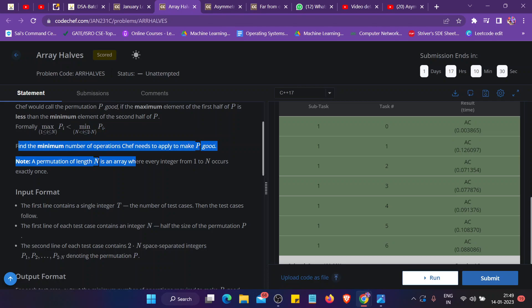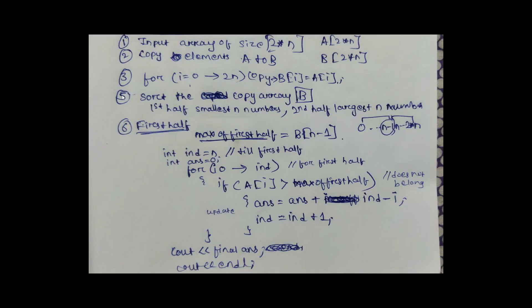We have to find the minimum number of operations Chef needs to apply to make P good. Let's directly jump into the solution. We have to input an array of size 2N.